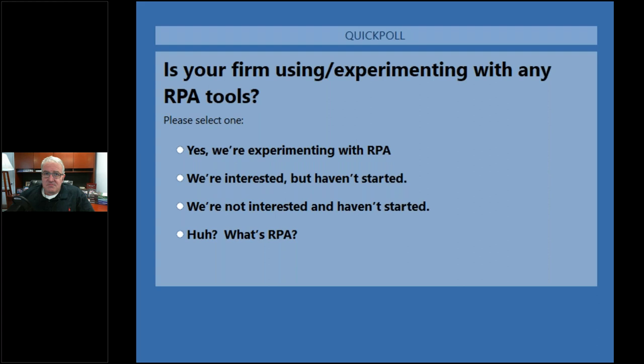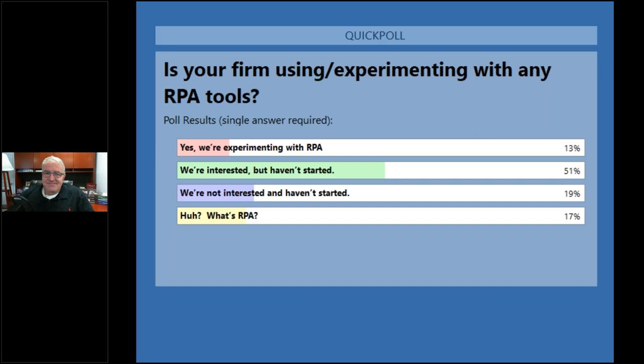Poll results: about half the people said they're interested but haven't started. 13% said yes, they are experimenting with RPA. 19% said they're not interested. 17% asked what's RPA. The fourth poll question today will be on the bots Brian was talking about. Brian, take it away.